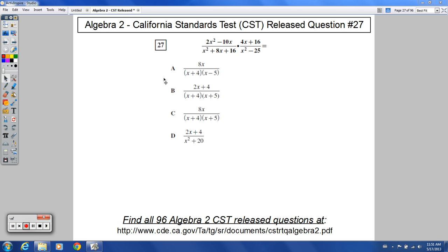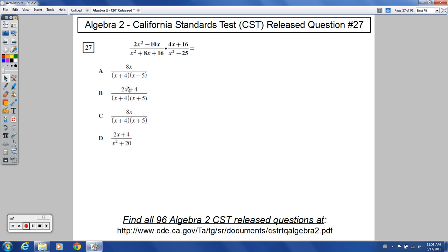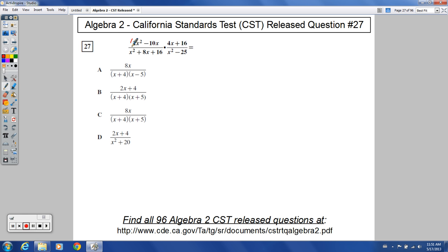Here's release question number 27 for the Algebra 2 CST questions. It looks like we've got quite a bit to factor here. Like I said a couple of problems ago, I'm going to treat this as separate problems. Each set of parentheses is like one separate problem, and in the end I can combine it all together. So let's think about this first.